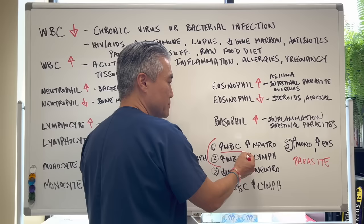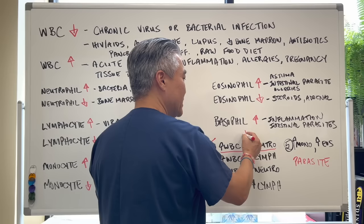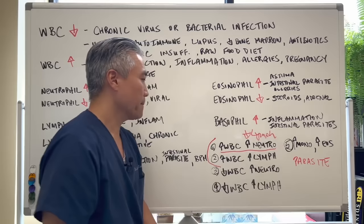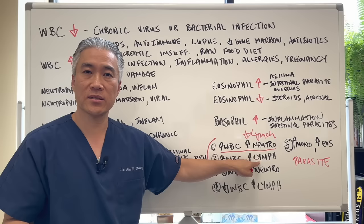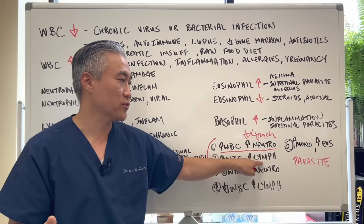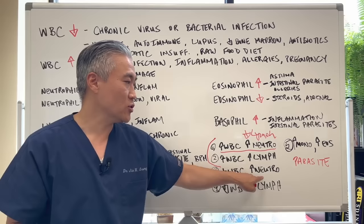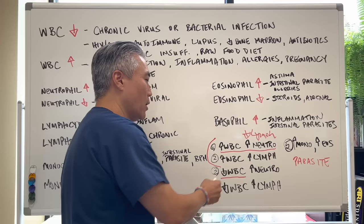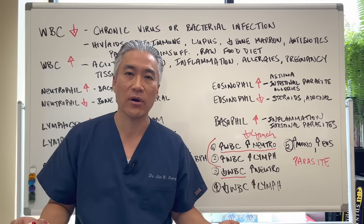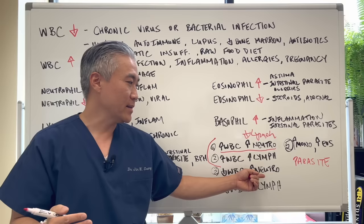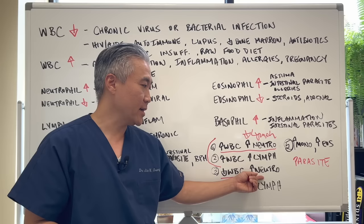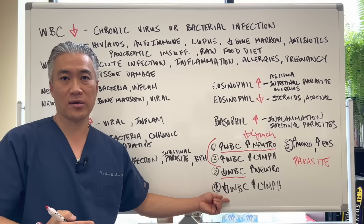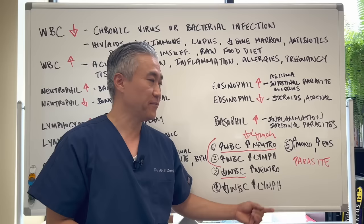If you have a bacterial infection, you'll have an increase in neutrophils and initially a decrease in lymphocytes. If you have an increase in white blood cells with increase in lymphocytes, that's acute viral — and you can also have a decrease in neutrophils. A decrease in white blood cell count with an increase in neutrophils is usually a chronic bacterial infection — the key is the low white blood cell count. A low white blood cell count with an increase in lymphocytes indicates a chronic viral infection.